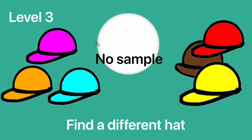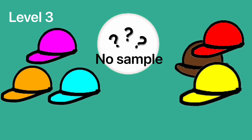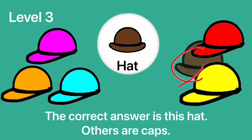Level 3. Find a different shape. Level 3. The correct answer is this hat. Others are caps.